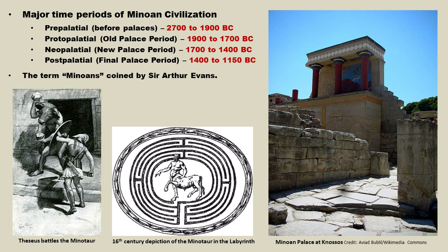The classical Greeks believed there was a King Minos, but no archaeological find has ever proven that. According to the legend, King Minos had his great palace on Crete and was king of the island. Poseidon provided him a white bull, and King Minos made the wrong assumption that he could keep it. Poseidon became angry, and the gods cast a spell on the wife of King Minos, causing her to fall madly in love with the white bull. They mated and produced this half-man, half-bull monster known as the Minotaur.